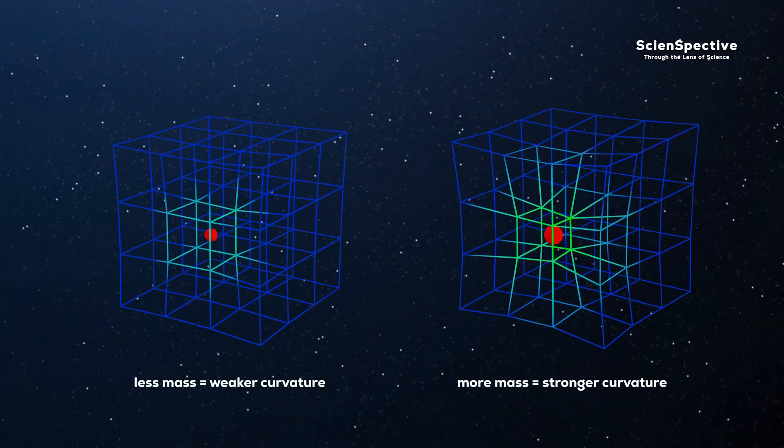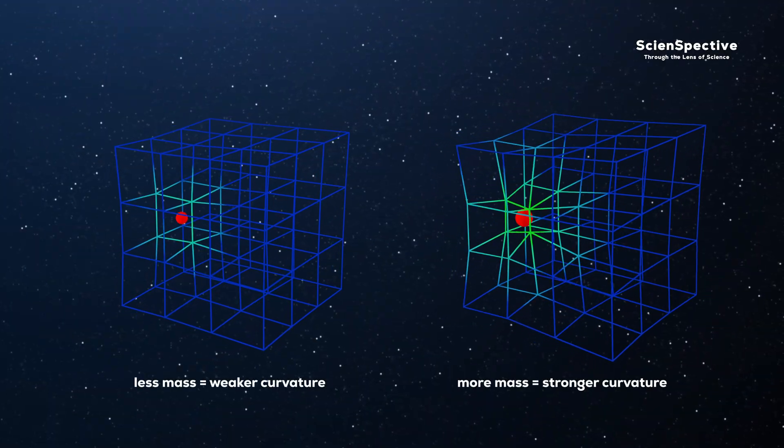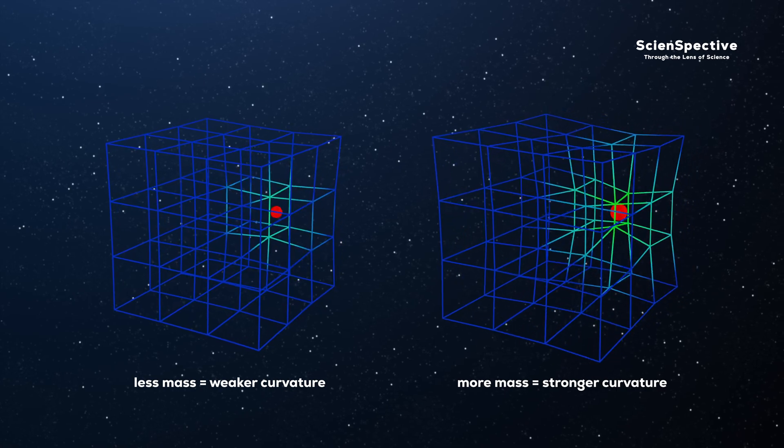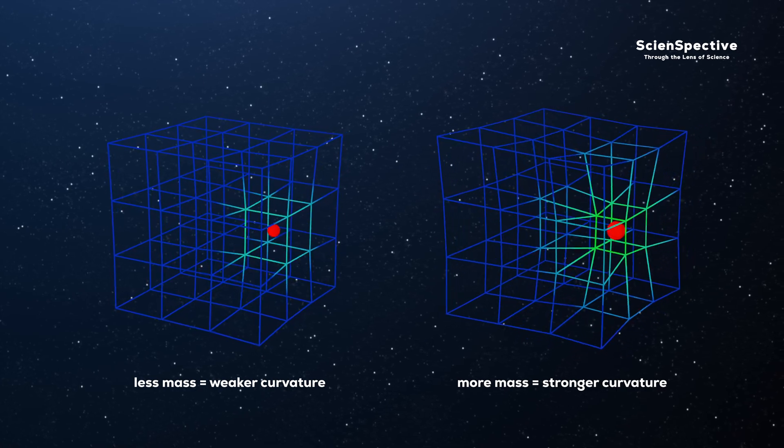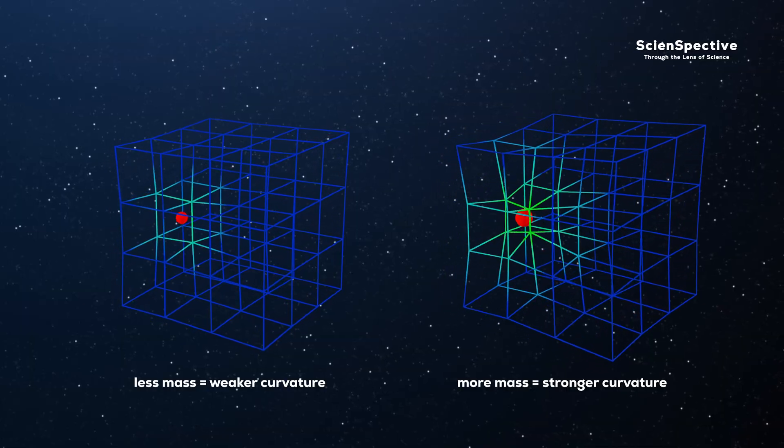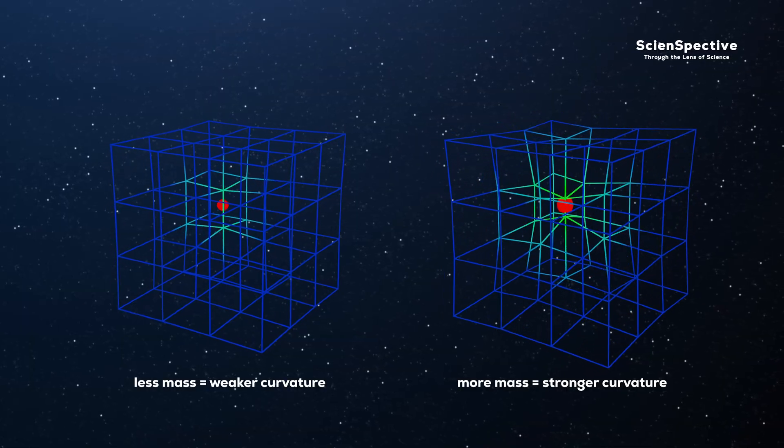We know that gravity is not a traditional force, but rather the curvature of space-time caused by objects with mass. The more massive the object, the greater the curvature of space-time. That is, the stronger the gravity.